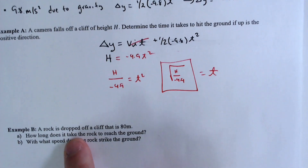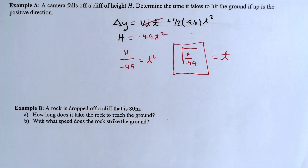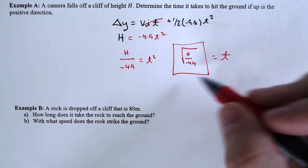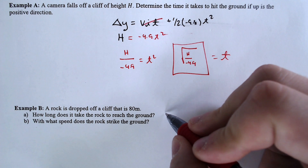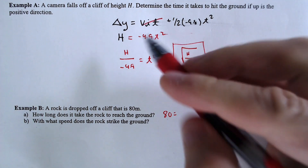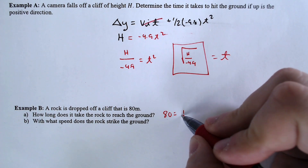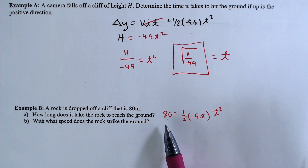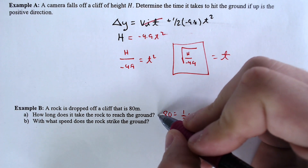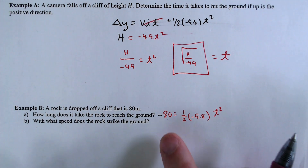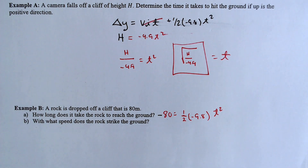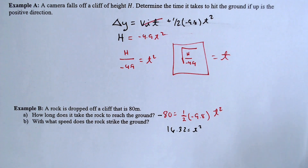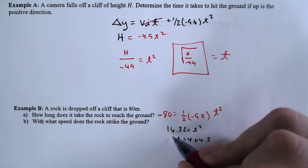A rock is dropped off a cliff of 80 meters. How long does it take the object to reach the ground? Using delta y equals one-half times negative 9.8 times t squared, and recognizing that since it falls down, delta y is negative 80. Dividing negative 80 by negative 4.9 gives 16.32 equals t squared. The square root of that, according to my calculator, is equal to approximately 4.04 seconds.